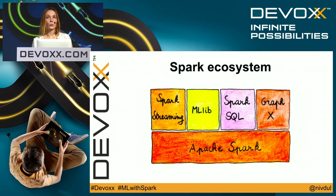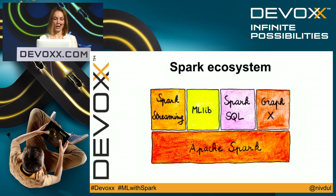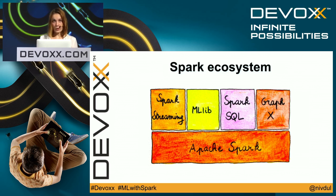Now let's talk about the Spark ecosystem. Spark includes four components: Spark Streaming, MLlib, Spark SQL, and GraphX. You can combine all of them together in the same application.